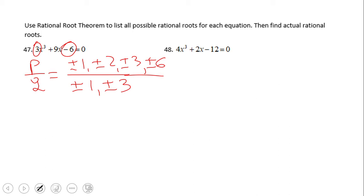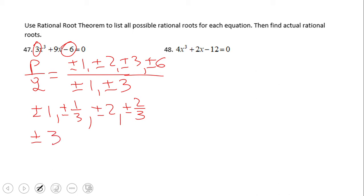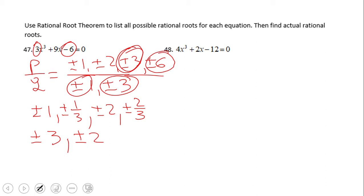Now, what are the possible choices? Plus and minus 1, plus and minus one-third. Also we have plus and minus 2, and plus and minus two-thirds. And also plus and minus 3. If we look at plus 3 over plus 3, or negative 3, we get something we already have. We already have plus and minus 1. The last unique choice is going to be plus and minus 6, which is the result of 6 over 1. So these are the possible roots — a total of 12 possible roots.